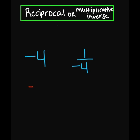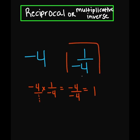And to check our work: negative 4 times 1 over negative 4. My numerator: negative 4 times 1 is negative 4. And then your denominator: 1 times negative 4 is also going to be negative 4. So negative 4 divided by negative 4 is 1, which is what we're looking for. So we know that 1 over negative 4 is the correct answer.